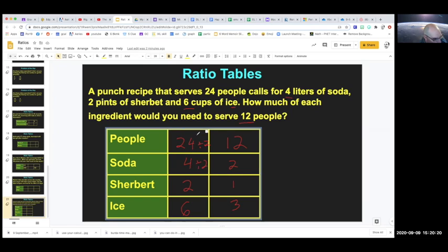Well, what if they gave us something else, like, what if they wanted it to be 36 people? Ooh, that's a hard one. So I'm going to put a 36 over here. So to go from 12 to 36, what do I have to do? Oh, I know. It's times three, right? Times three. 12 times three equals 36. So now two times three equals six. One times three equals three. And three times three equals nine. Got it? So now, if I needed to serve 36 people instead of 24, I would need six liters of soda, three pints of sherbet, and nine scoops of ice. Okay. That's great.